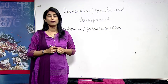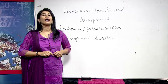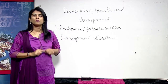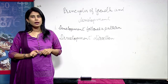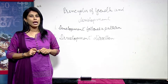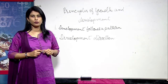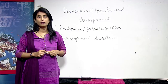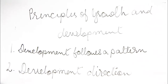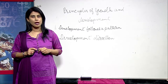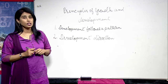Principle number two is the principle of development direction. The direction of development is cephalocaudal as well as proximodistal. This means development proceeds from head to limbs along the longitudinal axis (cephalocaudal), and from the centre to the periphery (proximodistal). The child gains control over the head first, then arms and legs, and learns to control large muscles first before making finer movements with smaller muscles. The child develops the ability to control the arms first, and then the fingers.